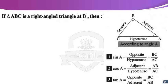Triangle ABC is the right-angled triangle at B, where angle B equals 90 degrees. Find the three trigonometrical ratios of angle A: sine A, cosine A, and tan A. What is the meaning of the sine of an angle? Sine of an angle equals the ratio between the opposite side length over the hypotenuse side length.